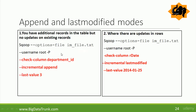We are importing on the basis of department ID, and the last value will be based on the department ID column. Since we want to import records with department ID greater than 3, the last value provided is 3. Incremental imports retrieve records newer than the previously imported set of rows. In append mode, new rows are continually added with increasing row ID values, and Sqoop imports rows where the check column has a greater value than the one specified with the --last-value parameter.